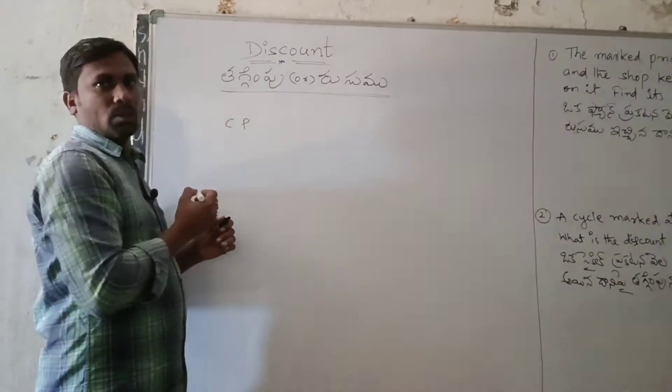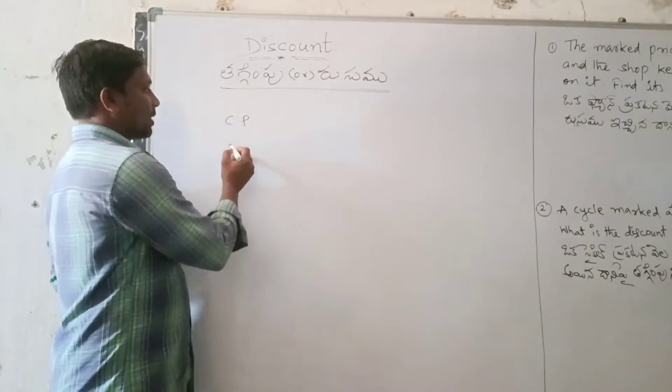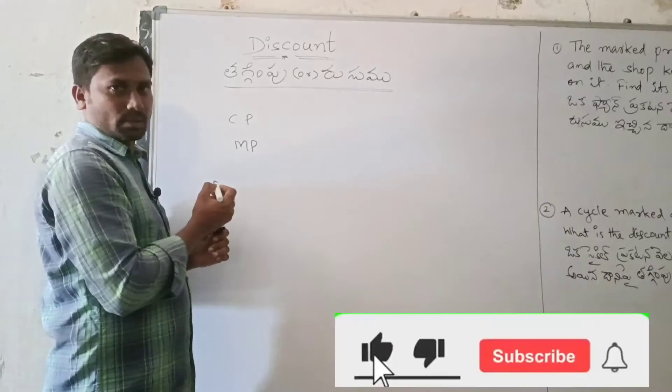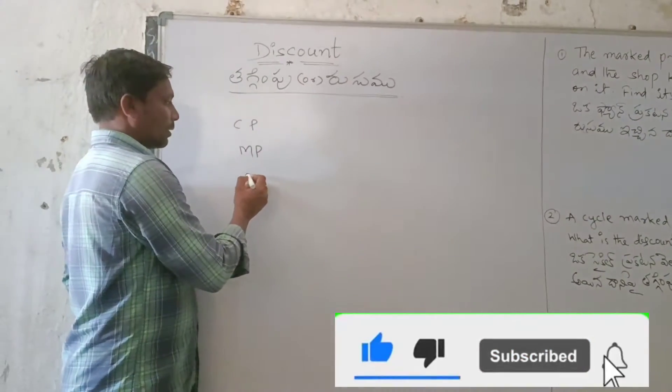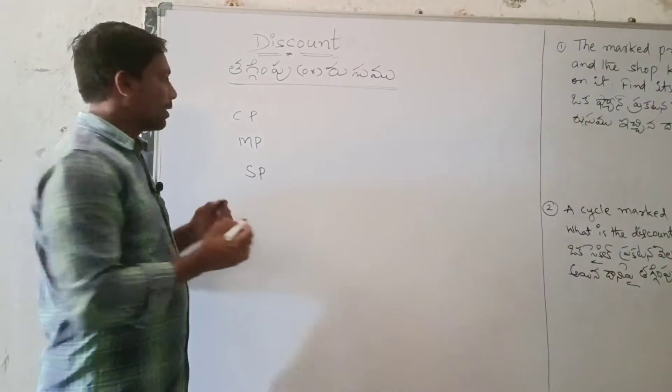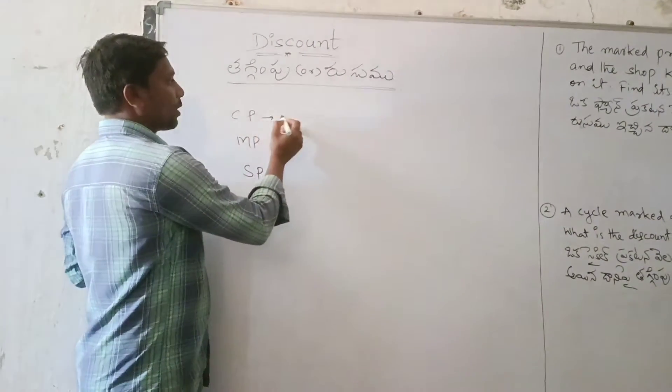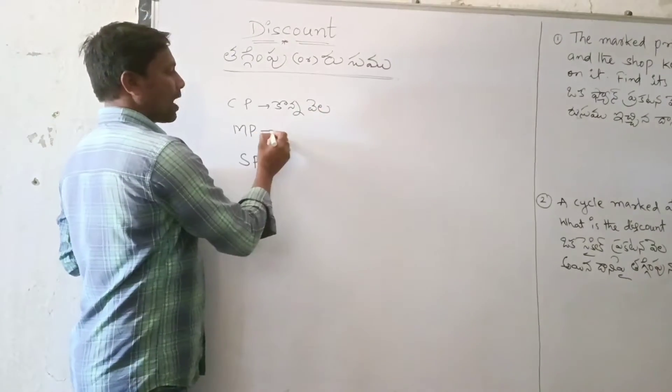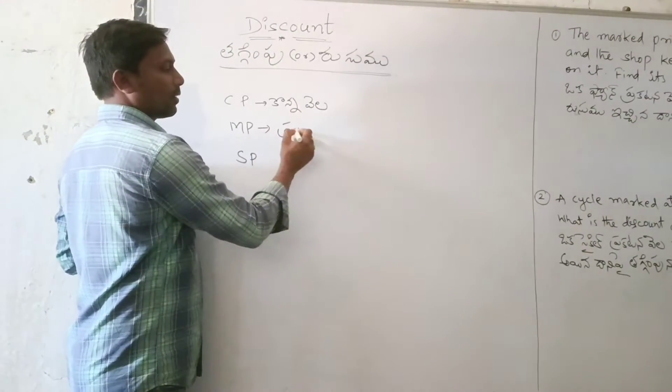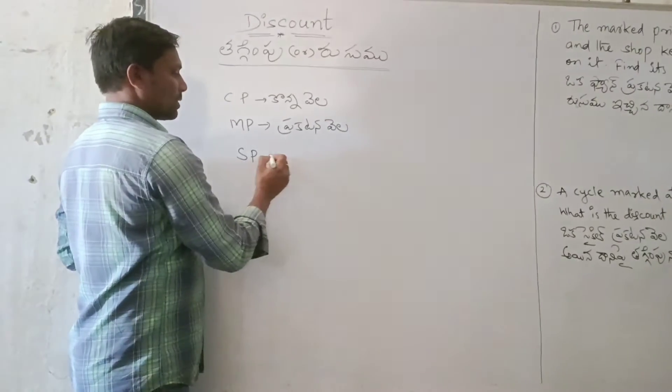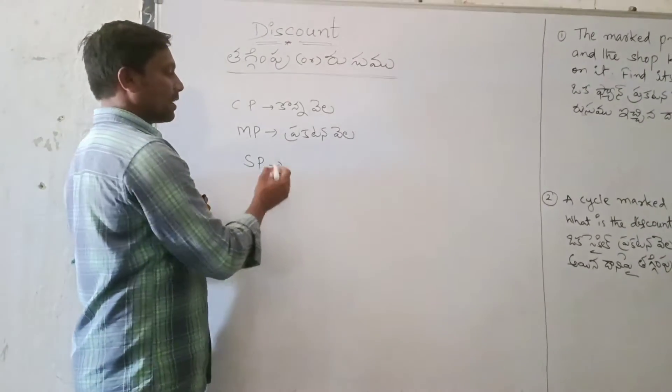C.P. - Cost Price. M.P. - Market Price. S.P. - Selling Price. Cost Price, Market Price, Selling Price.